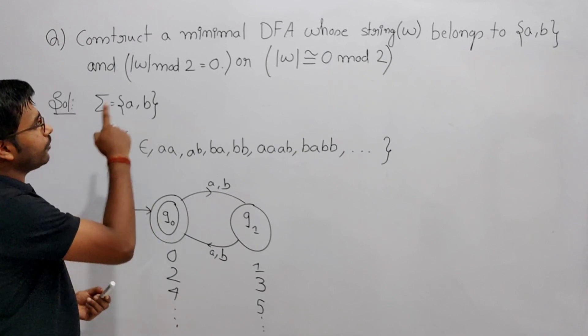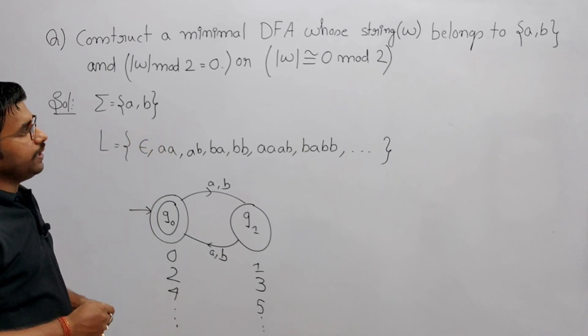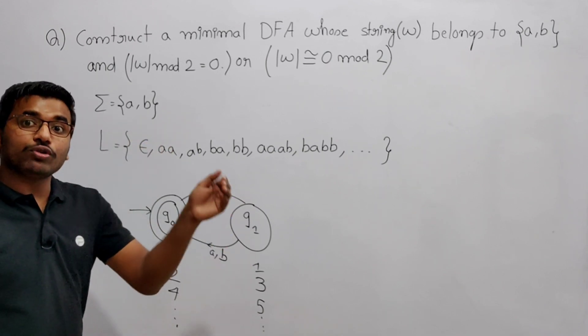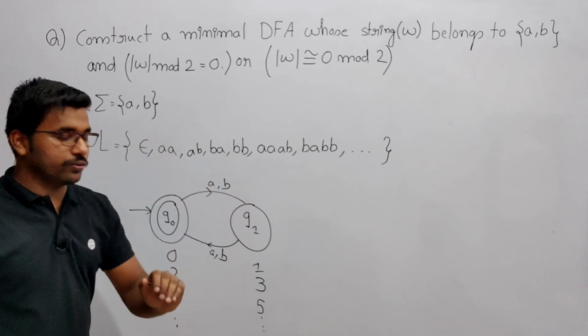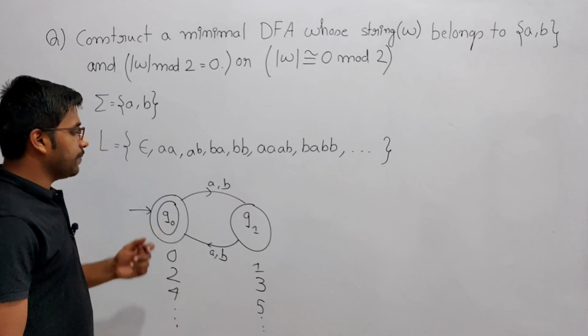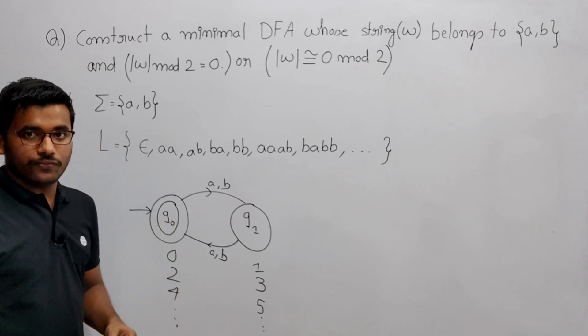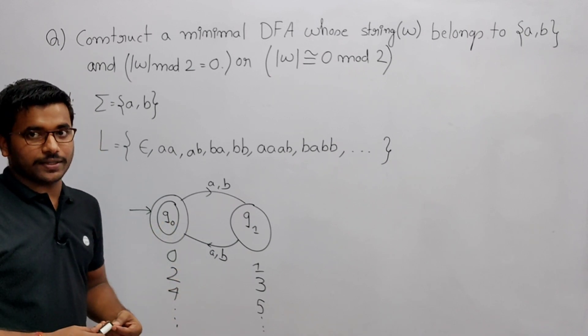Since I want to accept strings whose length is divisible by 2, I make q0 the final state — it accepts all strings whose length when divided by 2 gives remainder 0.